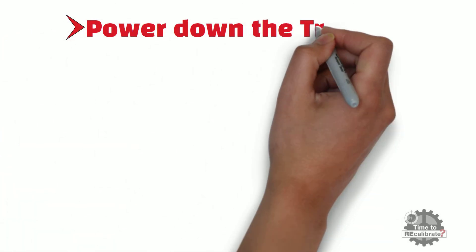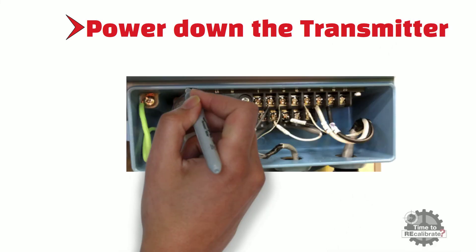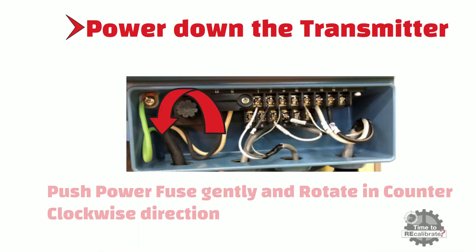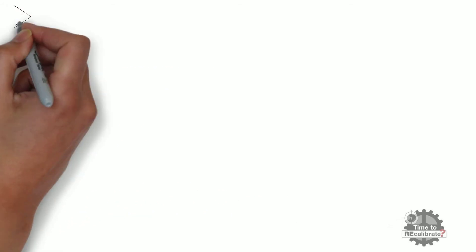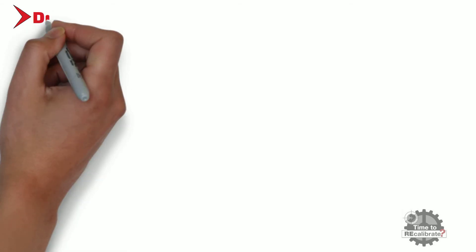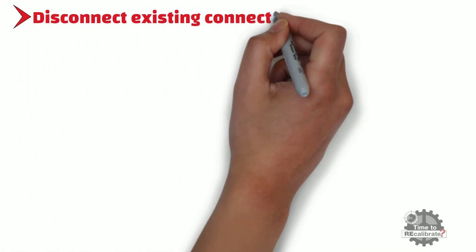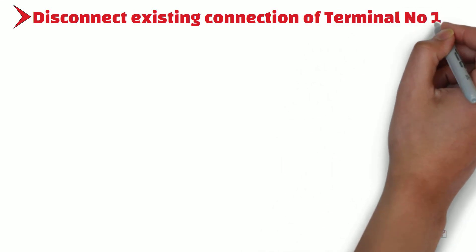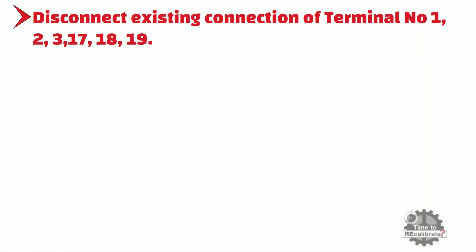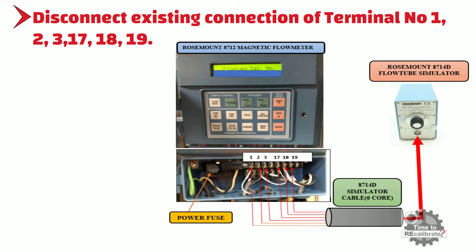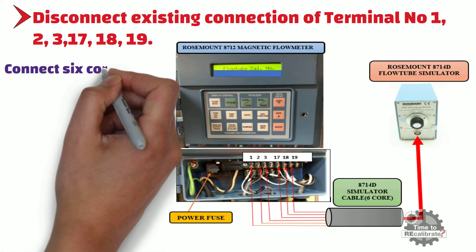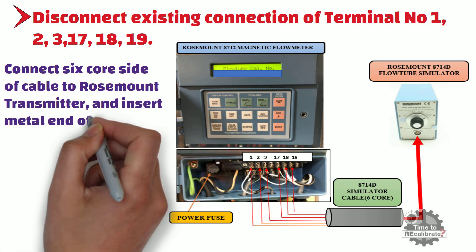Step 5: Power down the transmitter. Push the power fuse gently and rotate it in the counterclockwise direction. Once power is off, disconnect the existing connections on terminal numbers 1, 2, 3, 17, 18, and 19. Make sure that power is off when you disconnect the cable from the transmitter. Now connect the 6-core side of the cable to the Rosemount transmitter, and insert the metal end of the wiring assembly into the calibration standard.